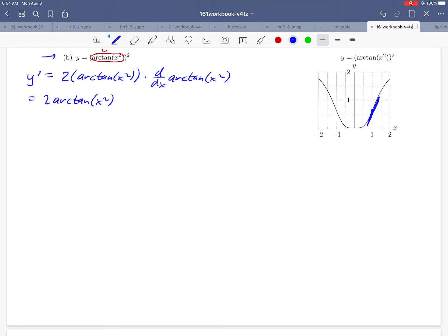We're done with the 2 arctangent of x squared part. To finish, we need to take the derivative of the arctangent of x squared. Notice that this is also a chain rule situation. This time the u is x squared.